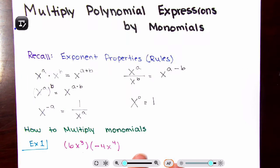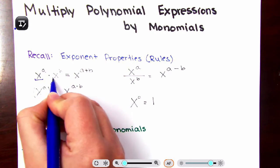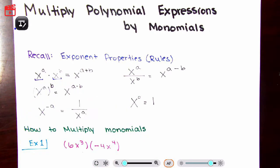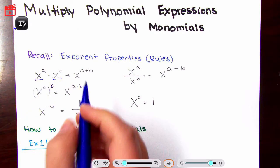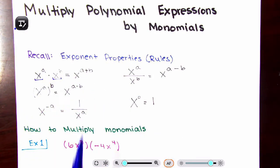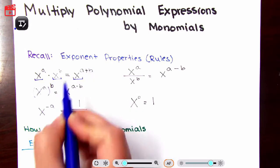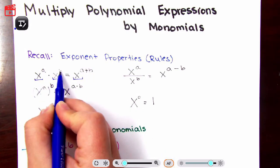Just a quick refresher on our exponential properties. For all of these, you have bases that are the same. So if you have a base that's the same and it is being multiplied, the exponents are going to be added. You keep the same base and add the exponents when you are multiplying.